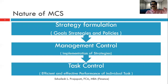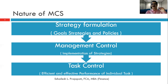First comes strategy formulation, then management control, and then task control. The lower-level team performs task control, while higher-level people perform management control, and above that is strategy. In other words, the hierarchy is: task, then management control, then goals, strategies, and policies.